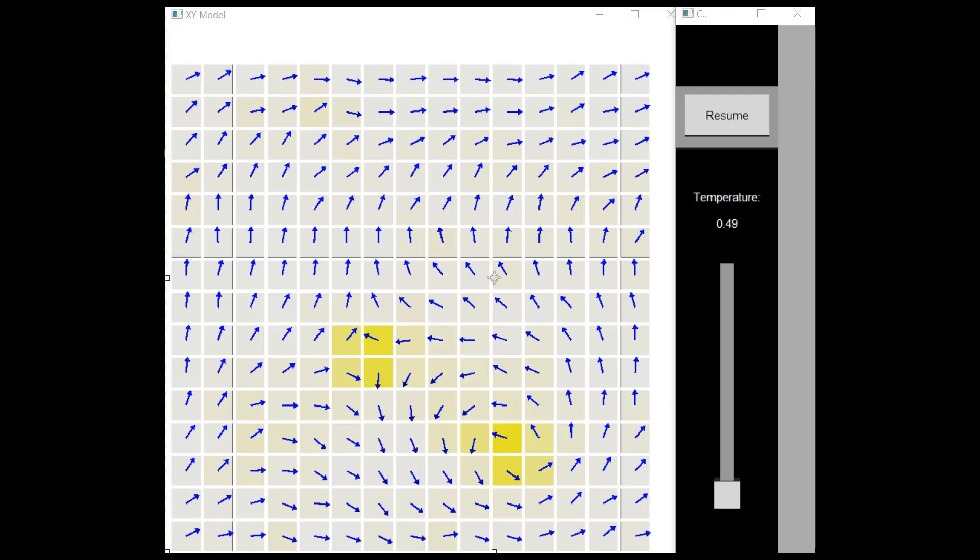One of the programs I've written for this project is a Vpython visualization of the XY model using the Metropolis algorithm with periodic boundary conditions for relatively small lattices, in this case a 16 by 16 lattice.